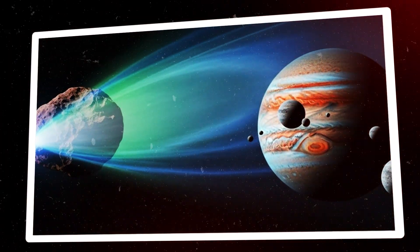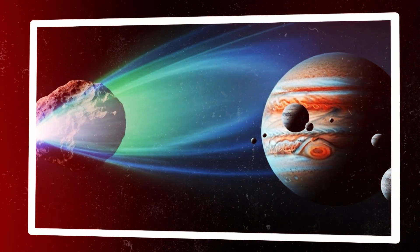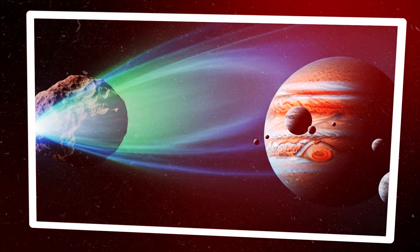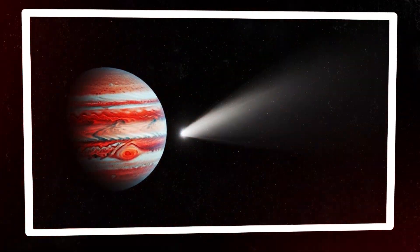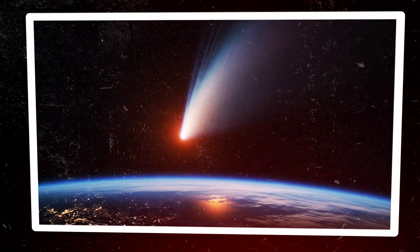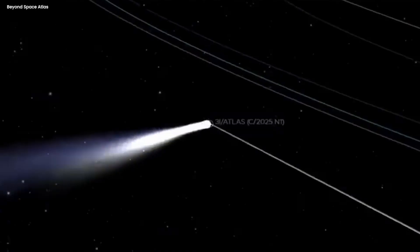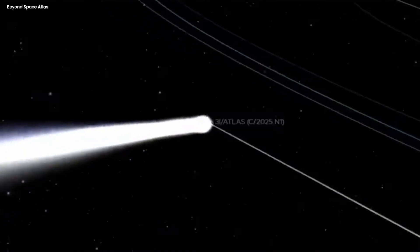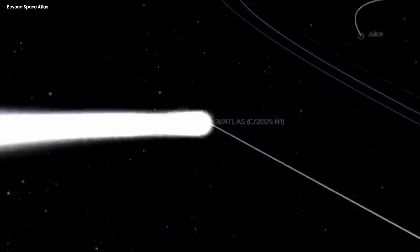Now, you might be thinking, OK, 53 million miles is still pretty far away. And you're right. It is far, but it's also three times closer than 3I Atlas ever got to Earth. So if we're comparing the two encounters, Jupiter is clearly getting the better view.